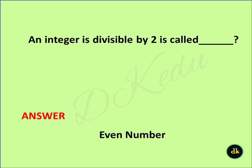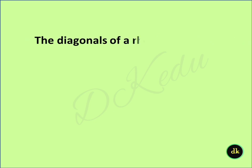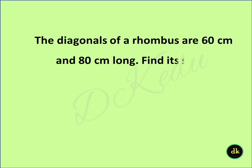The diagonals of a rhombus are 60 centimeter and 80 centimeter long. Find each side. Answer: 50.